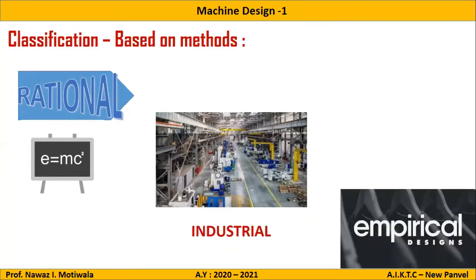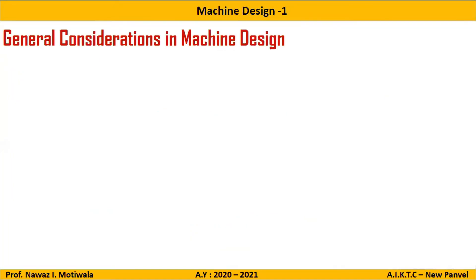Let us move forward with the next part, that is General Considerations in Machine Design. This is the most important theory part where in some papers it was asked for 10 marks, and normally it comes for 5 marks. The question you will generally find in most papers is: explain or enlist general considerations in machine design.